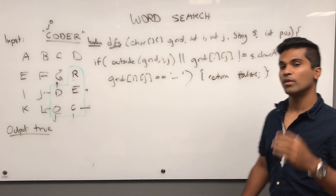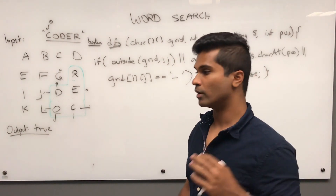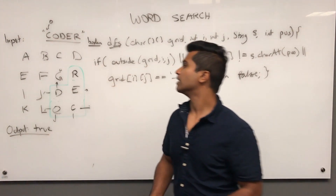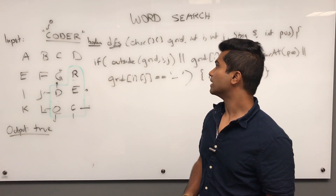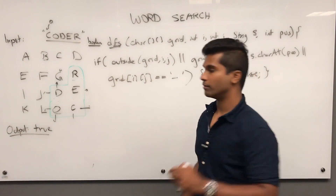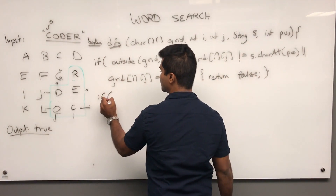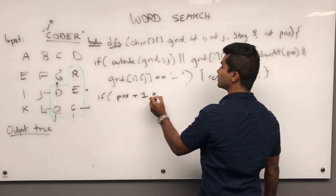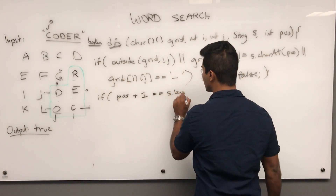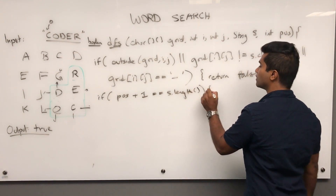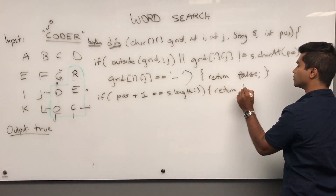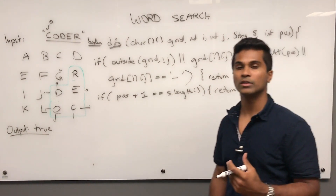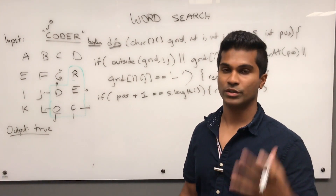When do we return true? The only time we return true is when we've reached the last letter. Since we're zero-indexed, if `pos + 1 == s.length()` then we return true. That's the core of the logic.